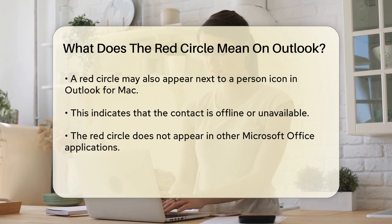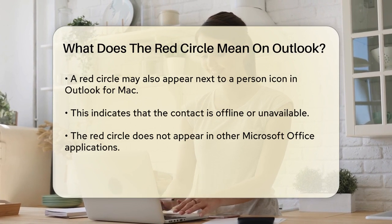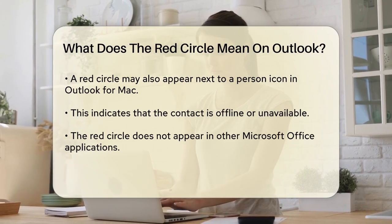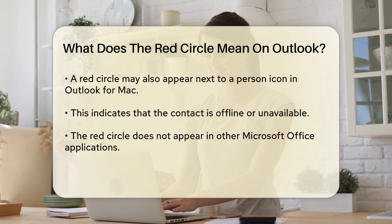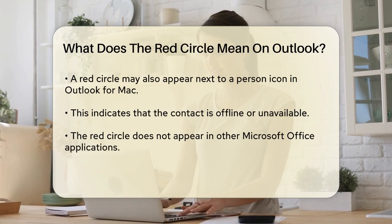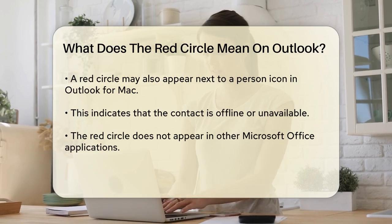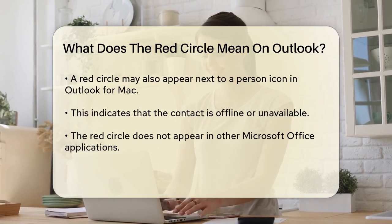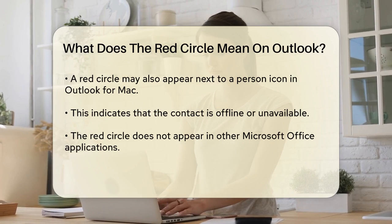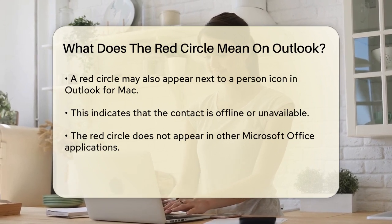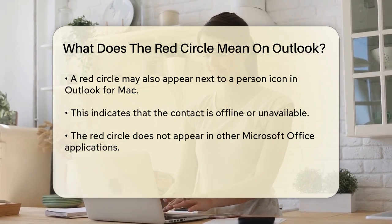Another instance is with the person icon in Outlook for Mac. If you see a red line circle through a person icon, it usually means that the contact is currently offline or unavailable. This is specific to Outlook and does not appear in other Microsoft Office applications.